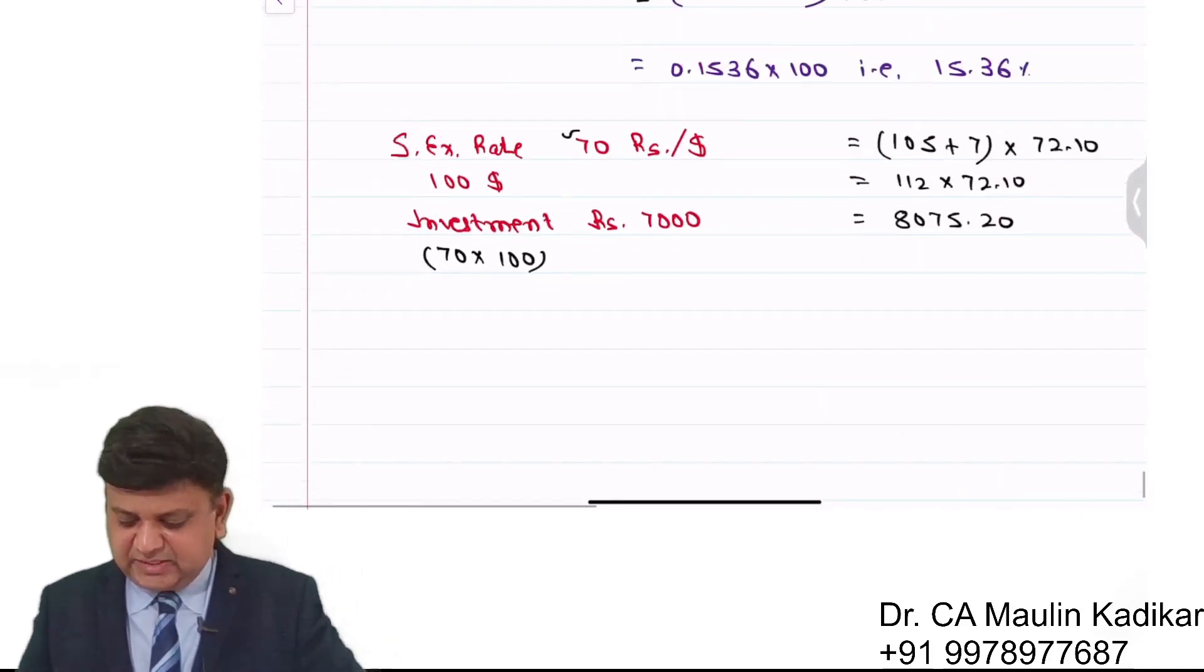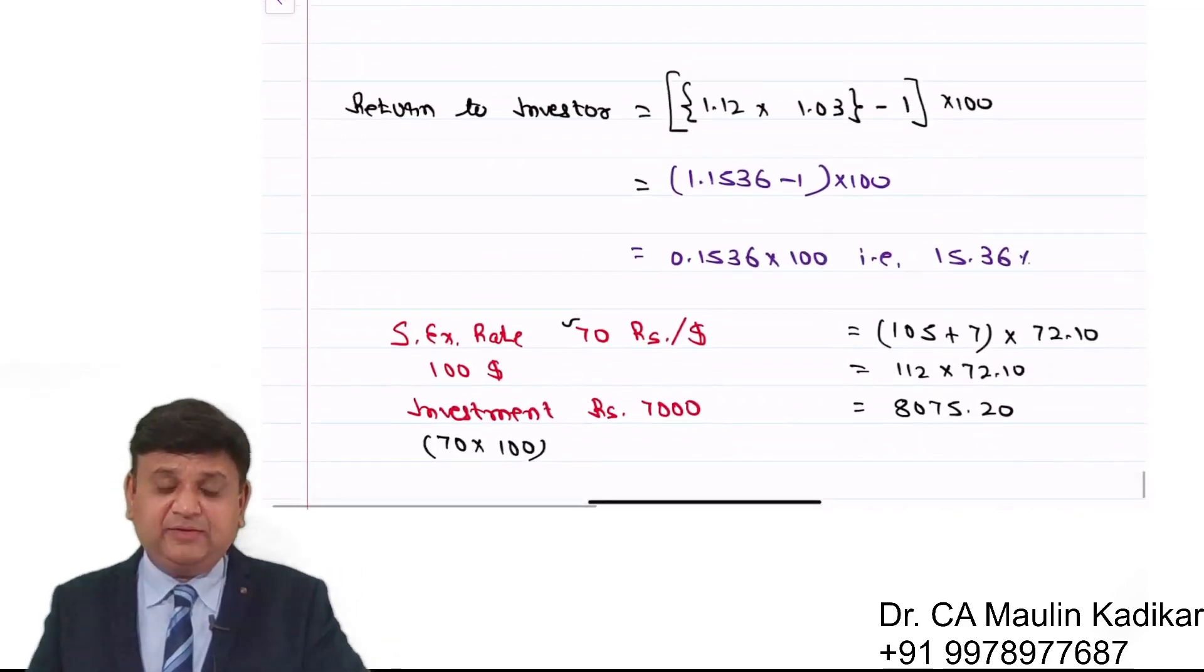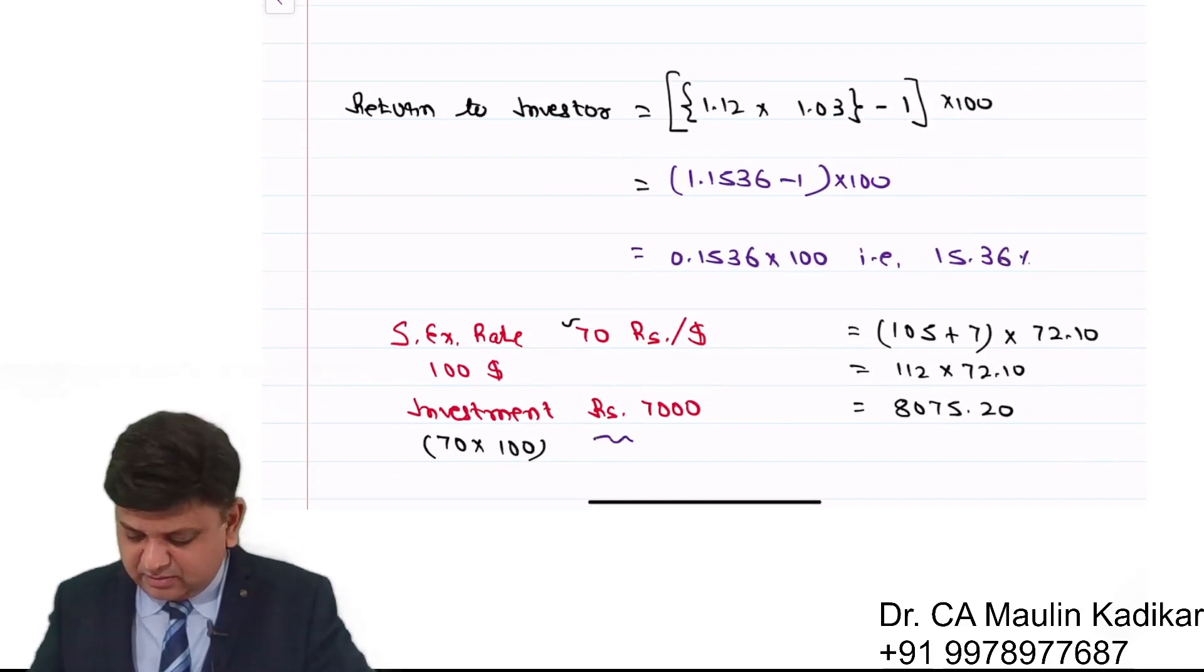So we understand that the investor has invested today how much? The investor has invested today 7000 rupees.